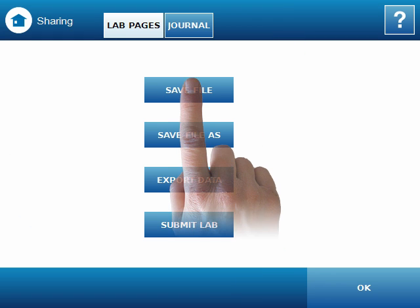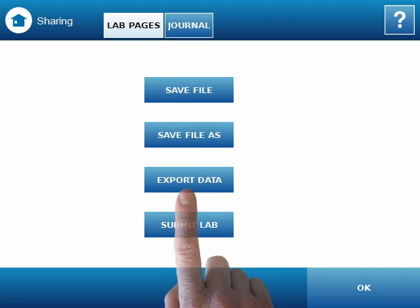In this screen, selecting save file or save file as will save the current lab as a Spark file on either the Spark Science Learning System or an external USB flash drive. The save file will include the entire lab, any data that has been recorded, and any journal pages that have been collected.